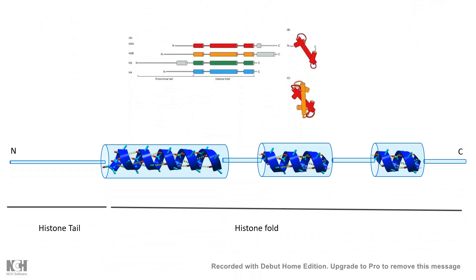Talking about the structure of histones: histones have two characteristic structural domains. One is the histone fold, which is a collection of three alpha helices conserved across all histones. So whether we take H2A, H3, or H4, the structural features are similar in this histone fold region — it is structurally and functionally conserved. Histones also have an elongated N-terminal tail which is rich in lysine, arginine, and several other amino acid residues.